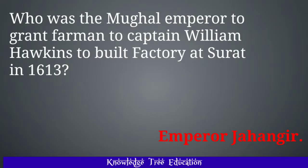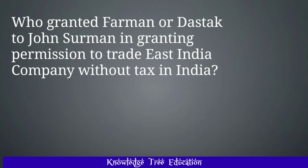And the answer is Emperor Jahangir, who granted Farman or Dastak to John Surman, granting permission to trade to East India Company without tax in India. And the answer is Emperor Farrukhsiyar.